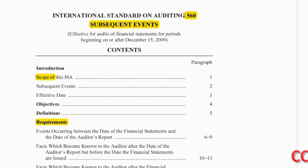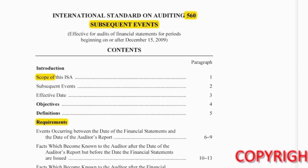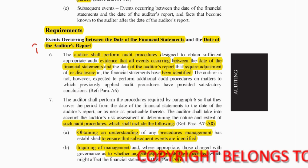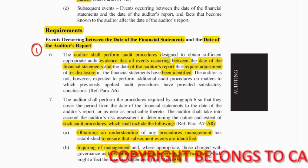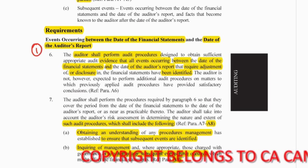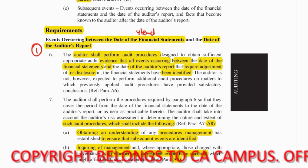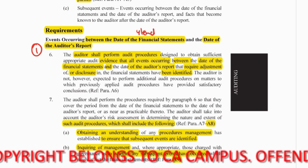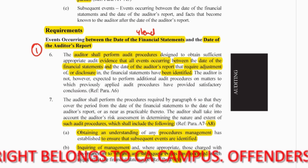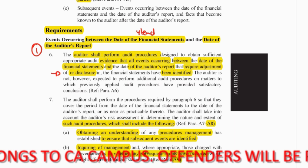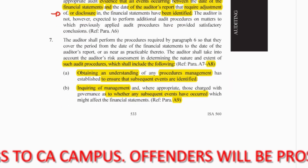ISA 560 - subsequent events. Let's go straight to the requirements. Our first requirement covers events occurring between the date of the financial statements and the date of the audit report, which means we are in Period 1, because the date of the financial statements is year end. We have to ensure that events that require adjustments or disclosure in this period have been identified.